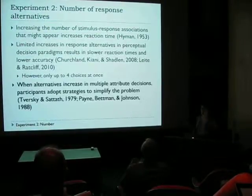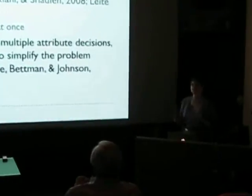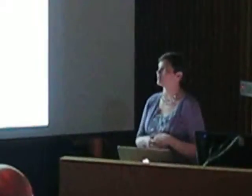On the other hand, in multiple attribute decisions, participants tend to adopt strategies to simplify the problem space. As they see more and more response alternatives, they start eliminating obvious non-choices and use other strategies to speed their response and use their information a little more effectively.